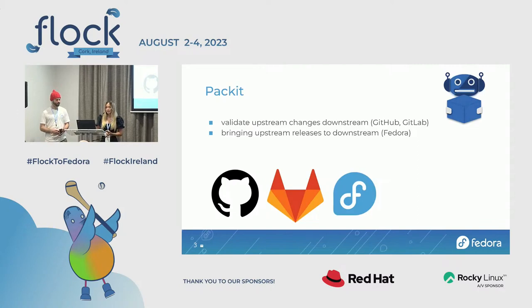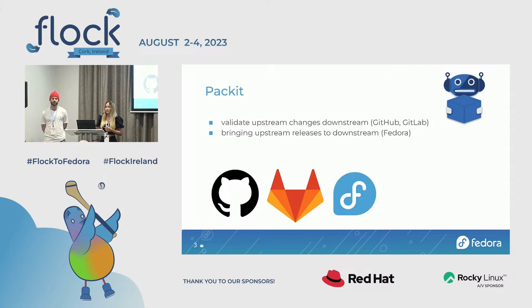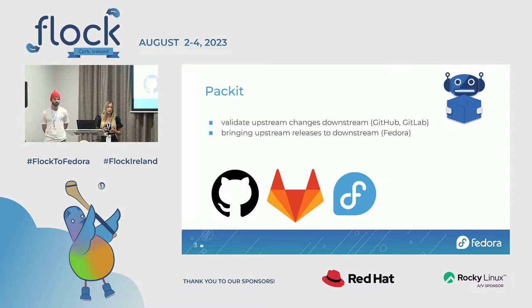Starting with Packit: Packit is an open source project that tries to bring upstream and downstream closer together. It has two main goals. The first is to validate upstream changes downstream — a CI system that works in GitHub or GitLab. The second goal is to bring upstream releases to downstream and automate the process for Fedora package maintainers. Today we'll talk about Packit mostly as a service operating on GitHub and GitLab, though there's also a Packit CLI tool you can install on Fedora and run locally.